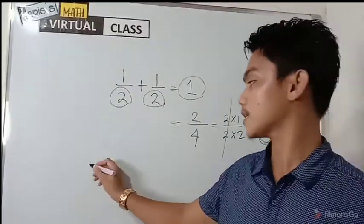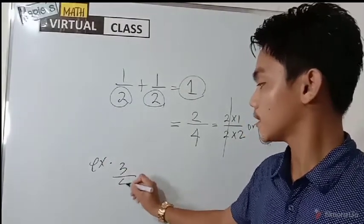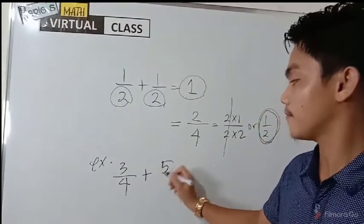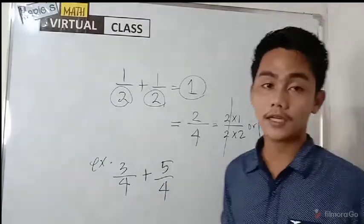Okay, let's have another example. Three-fourths plus five-fourths. As you can see, in this fraction, they have the same denominator. So they are similar.